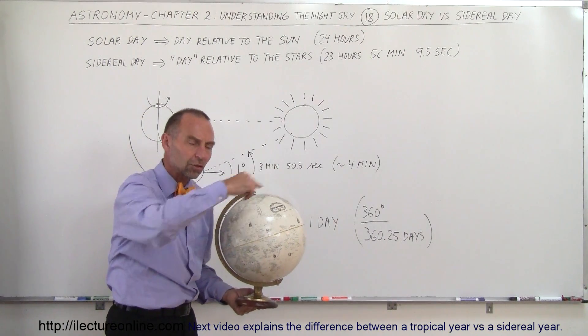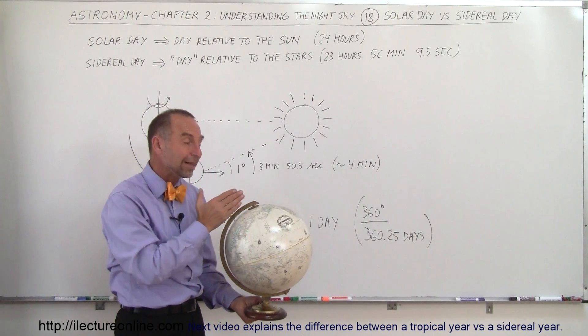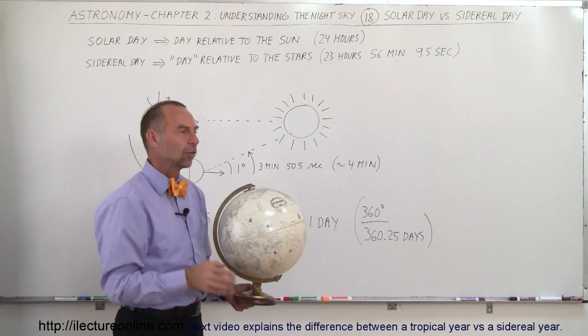And one complete circle is 360 degrees, which means that every day the Earth moves approximately one degree in its orbit around the Sun.